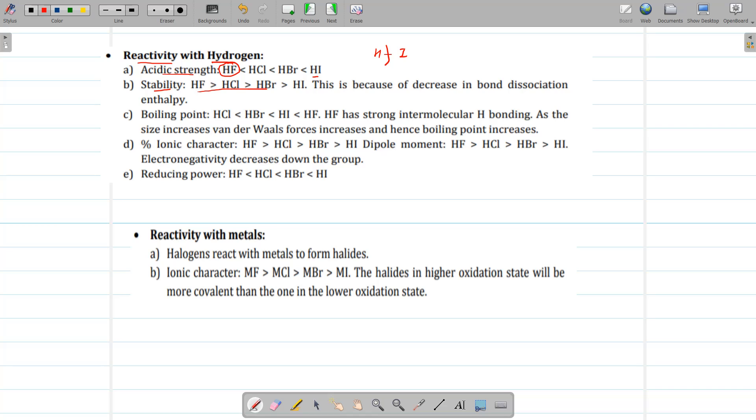Then is the stability. Stability of halogen acid decreases as we move from fluorine to iodine. This is because of decrease in the bond dissociation enthalpy. As bond dissociation enthalpy of HI is less, it will be less stable.